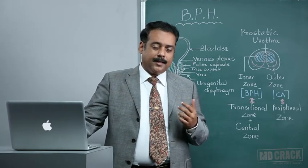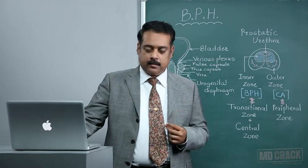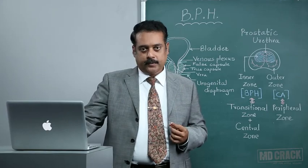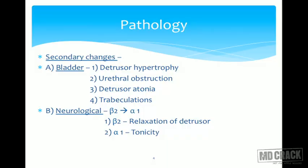There are two receptors: alpha receptors and beta receptors. Alpha receptors contribute towards the tonicity of the bladder, and beta receptors are for relaxation of the detrusor muscles or the sphincter. What we have seen is a conversion of beta-2 to alpha-1. This conversion causes the main functional problem — detrusor relaxation is reduced, causing hypertrophy and decreased tonicity of the bladder.